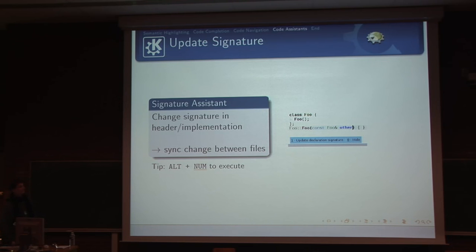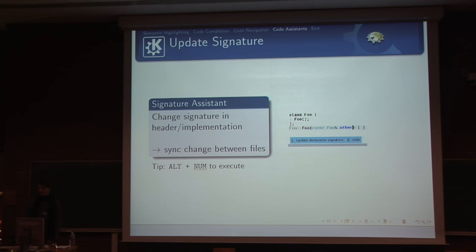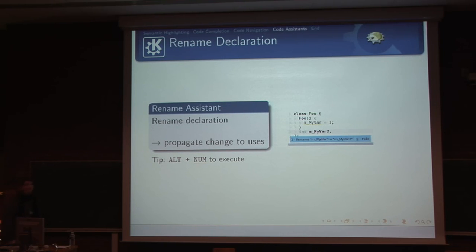Assistance features are little helpers that take on mundane tasks. For example, if you separate implementation from definition and add const foo to the constructor, KDevelop asks: do you want to update the declaration signature? Press Alt+1 and it automatically updates the declaration. The same goes for renaming variables — rename a member variable and it offers to rename all users of that variable. This is a new feature in KDevelop 4.2.